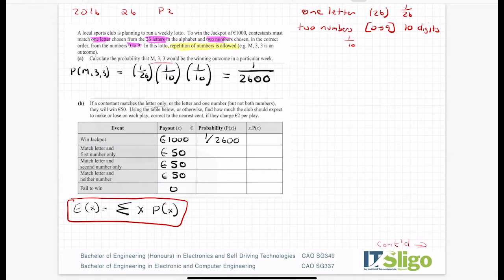Let's work out the probability that you match the letter and the first number but not the second number. The probability you match the letter is 1 chance out of 26. The probability that you match the first number is 1 chance in 10. Now the probability that you do not match the second number, well you've only 1 chance in 10 of getting it right. So you have 9 chances out of 10 of getting it wrong. If we say that second number was 3, well then if you get 0, 1, 2, 4, 5, 6, 7, 8, 9, there's your 9 chances of not getting it. So you get 9 over 2600. You have 9 chances out of 2600 of matching the letter and the first number only.